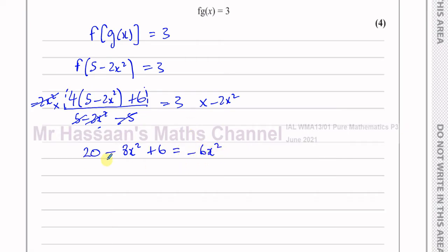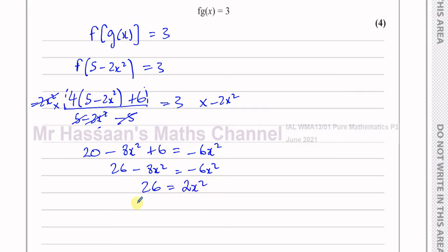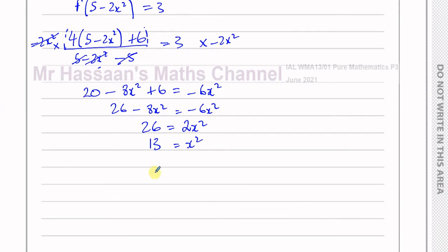So we have 26 − 8x² = −6x². This is a quadratic with only an x² term, no x term. Adding 8x² to both sides gives 26 = 2x². Dividing both sides by 2 gives x² = 13, so x = ±√13.